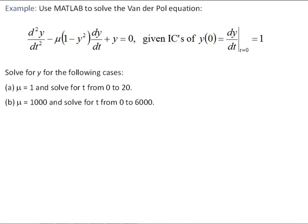So to see an example of that, let's look at this example using the Van der Pol equation. We'll solve for Y in the Van der Pol equation for the following two cases. For the first case, with mu equal to 1, we'll solve for T from 0 to 20. And for the second case, with the parameter mu here equal to 1000, we'll solve for T from 0 to 6000.